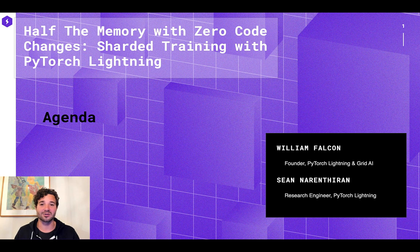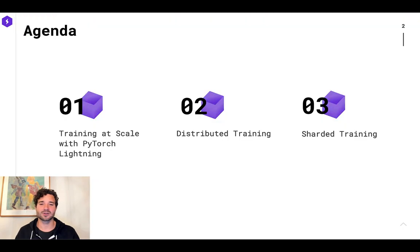So today we're going to talk to you about sharded and how to apply it to getting models to train at scale. If you've tried to train at scale across many GPUs or many nodes, you know that there are a lot of challenges. We're going to cover three things today. We're going to teach you how to do training at scale with PyTorch Lightning. Then we're going to talk about distributed training. And then we're going to talk about sharded training.